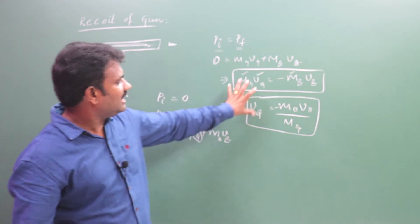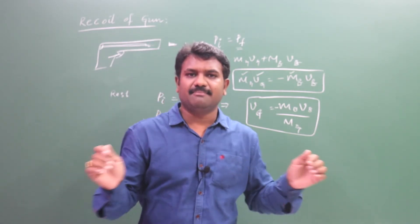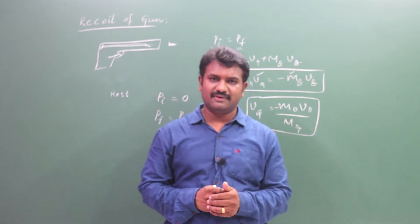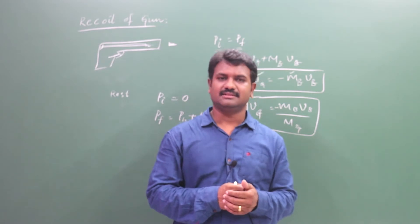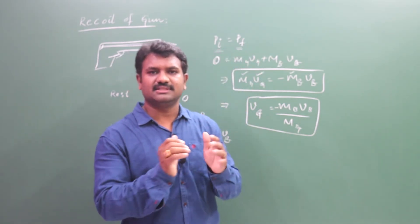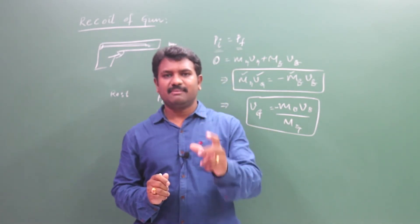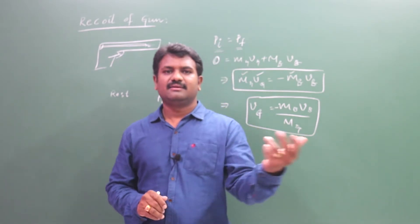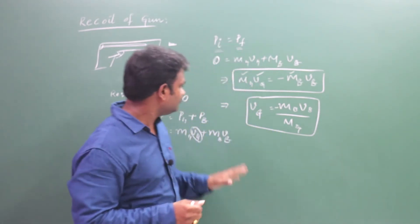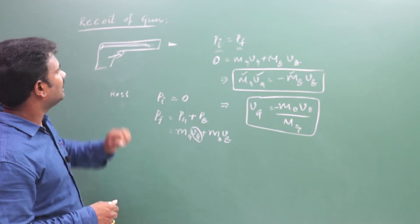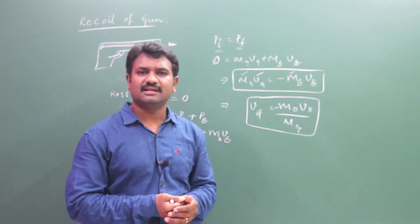So I have just rearranged these terms so you can see both cases are the same. This is how we find the recoil velocity of the gun and the velocity of the pieces of a bomb.